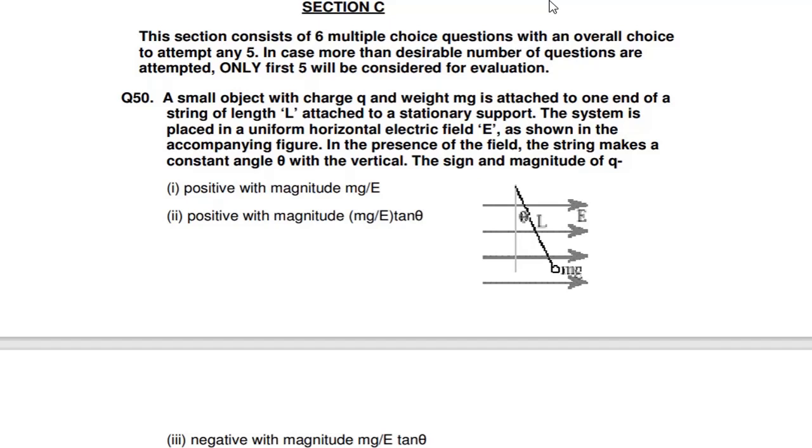Hello everyone, I am starting with Section C. In Section C we have six questions and you have to attempt any five. You will actually have only the first five which you can get marks for. The last one will not be counted whether it is correct or wrong.